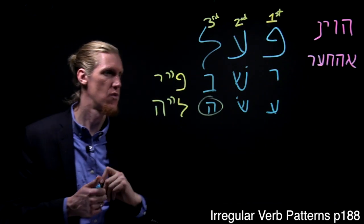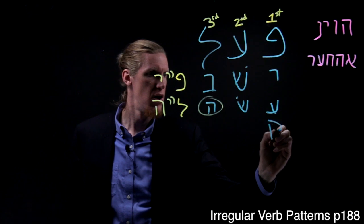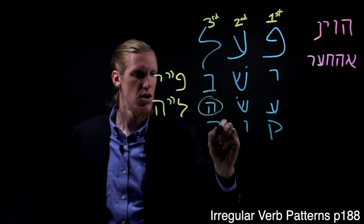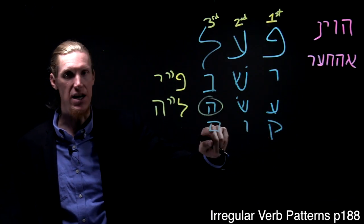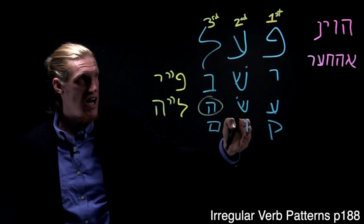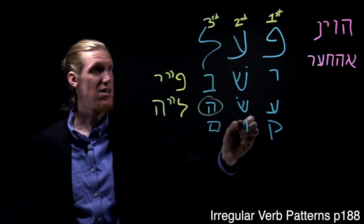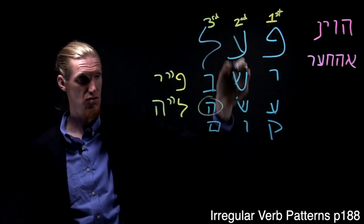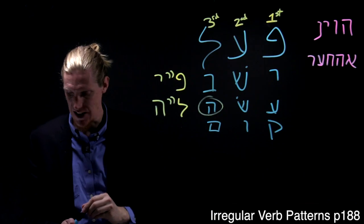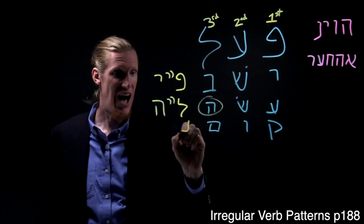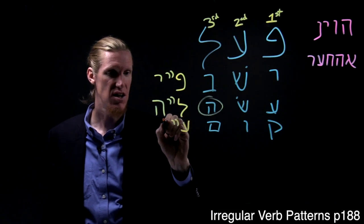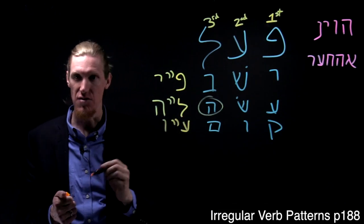Another example: Kum. Kof, Vav, Meim. Here the Vav, which is a weak letter, is in the second root position, which is referred to by Ain. It's in the Ain position. So we call it an Ain Vav.